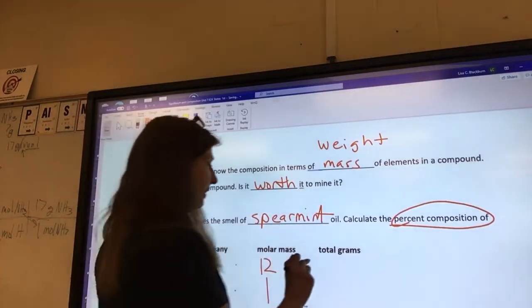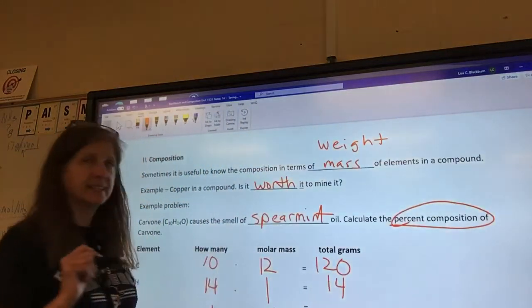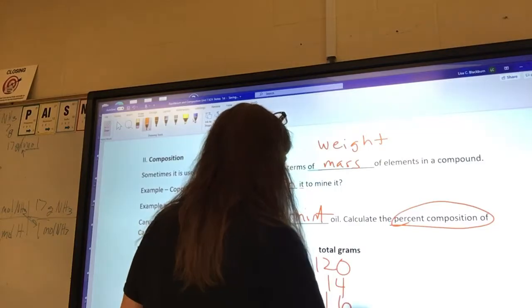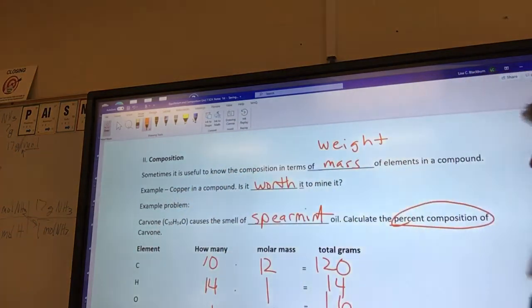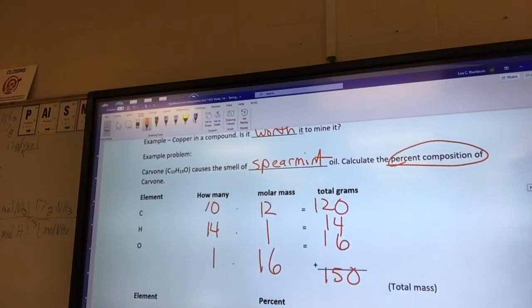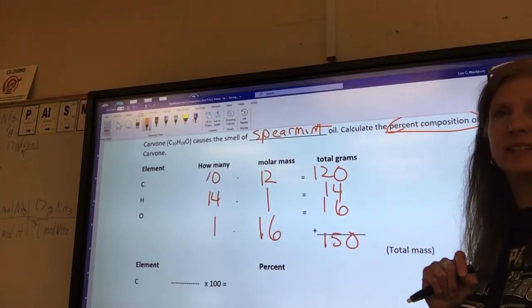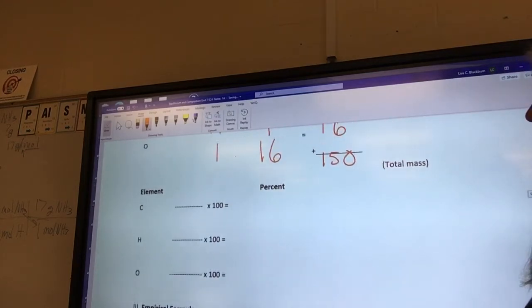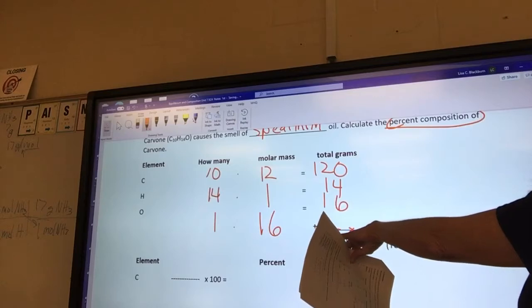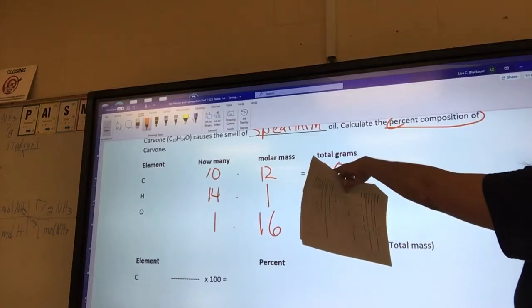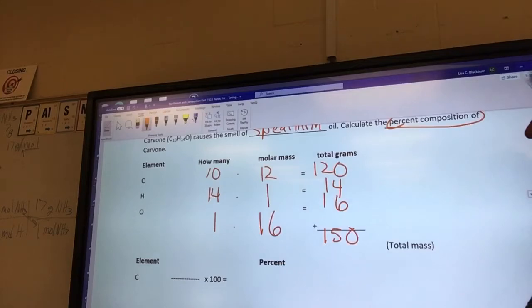10 times 12 is 120. 14 times 1 is 14. 1 times 16 is 16. Then you add them all together. 150. 150 is your total mass. So far, all we did was we got the molar mass of it. But we did it in a way that we know the molar mass of each part. Does that make sense to you? So we have to be neat while we do this math. Next, you go down, and for each one, you take its partial mass, and you divide it by the total mass.